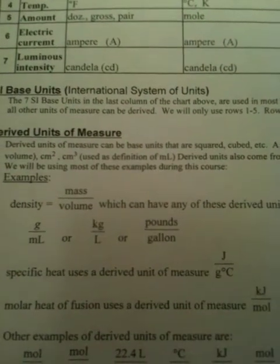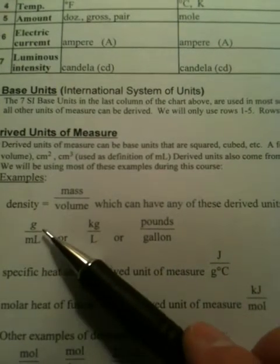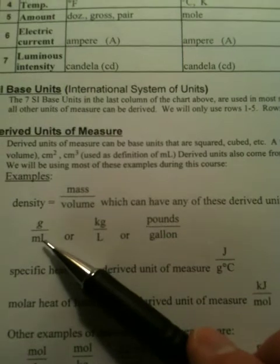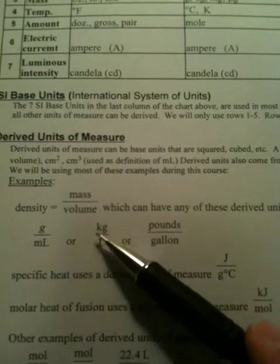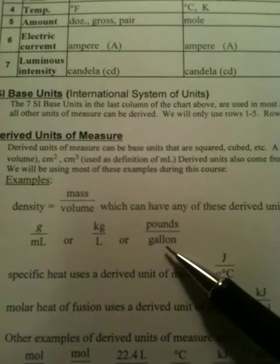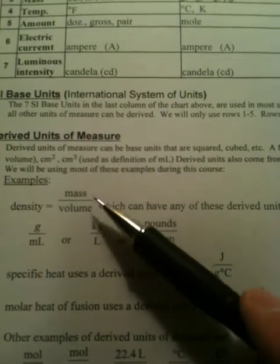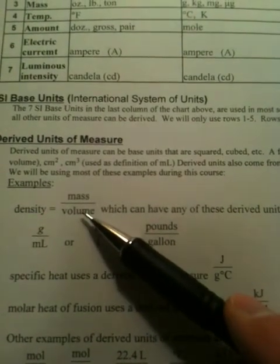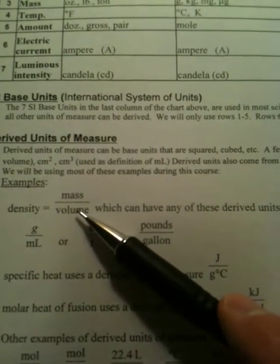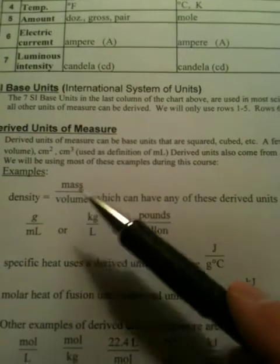Now if you go to the three examples I have, the most common one that you'll use in densities are grams per mil. But you could also have kilograms per liters or you could do pounds per gallons. Any mass unit over any volumetric unit of measure.